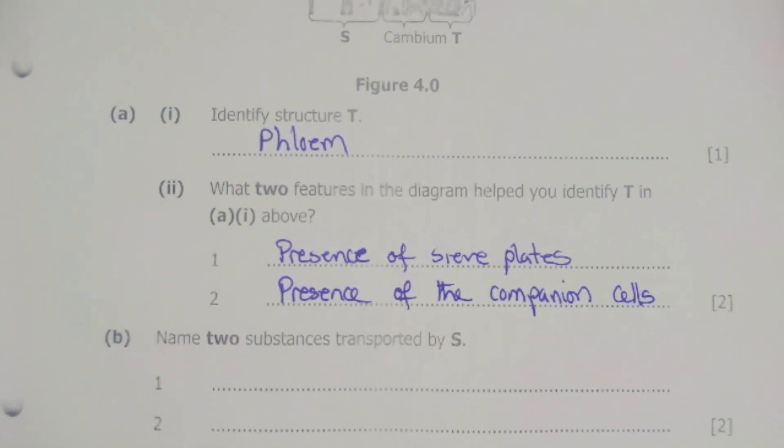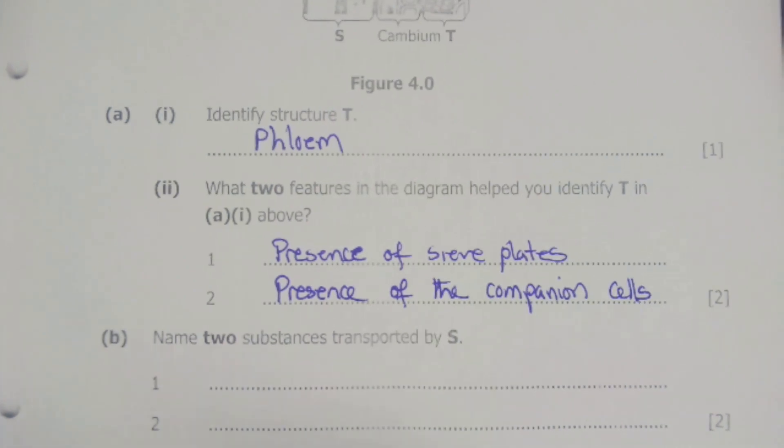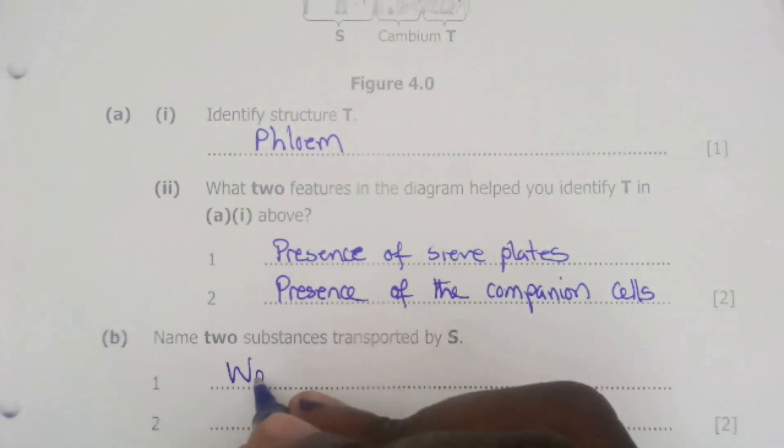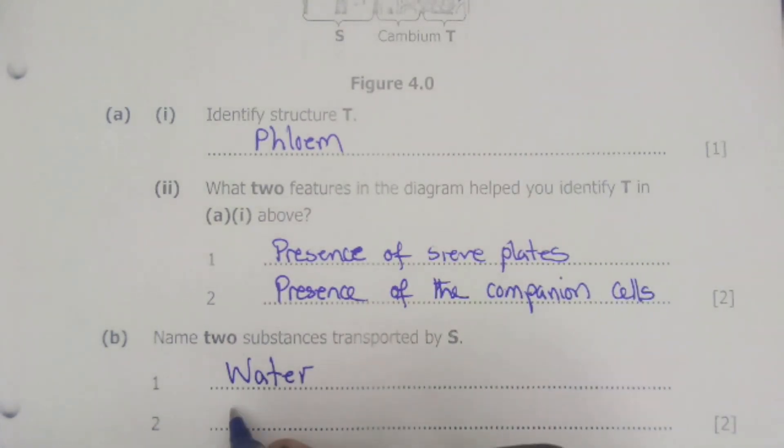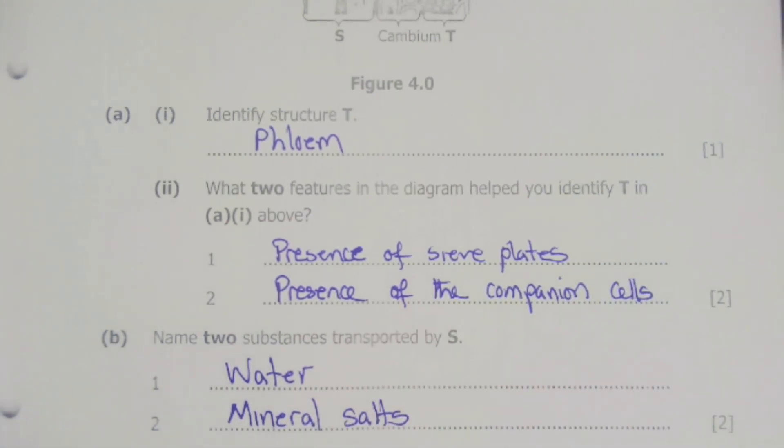The xylem vessels are actually in charge of transporting water and mineral salts. So the first thing they transport is water and also transporting mineral salts. Those are the substances which are transported by the xylem vessels.